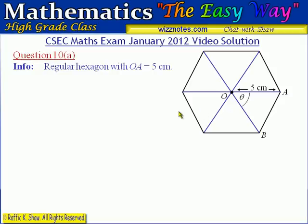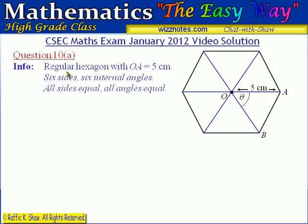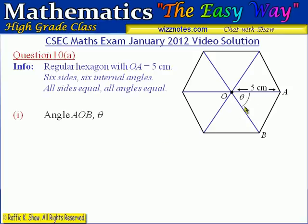Let's put that information in one at a time — the information we need to solve this question. Because it's a hexagon it has six sides and six internal angles. Because it is a regular hexagon, all sides are equal and all internal angles are equal. The first question is asking us to determine angle AOB, which is the angle I have marked theta.